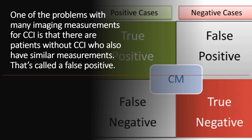The problem has always been trying to find a measurement that normal people don't have at all, and I think that may have been done — and that's why this is so exciting — based on a new study looking at digital motion x-ray, or DMX.